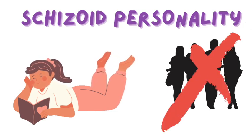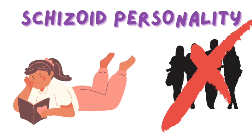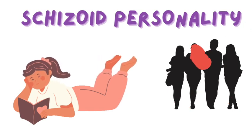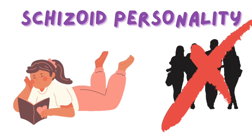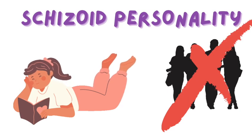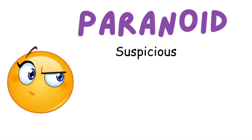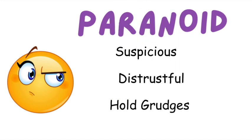For completion of the Cluster A personality disorders, we have to mention paranoid personality disorder. In this disorder, these persons are very suspicious of everything and they distrust people. They assume that people may be manipulative, liars, or just will disappoint them in the end. If they feel that they have been deceived in any way, they may react harshly and hold grudges for a very long time.